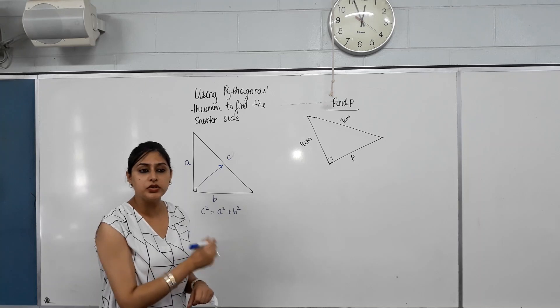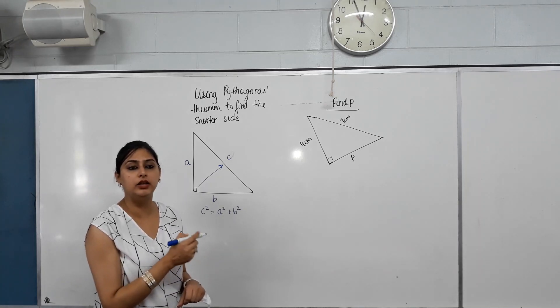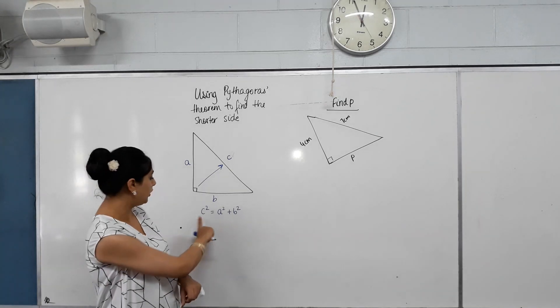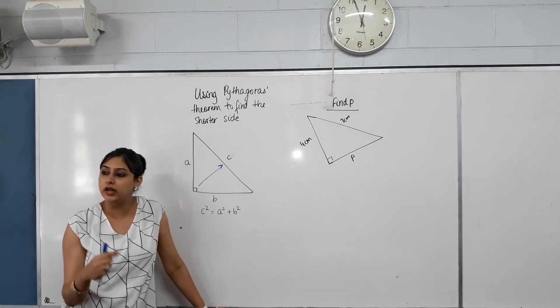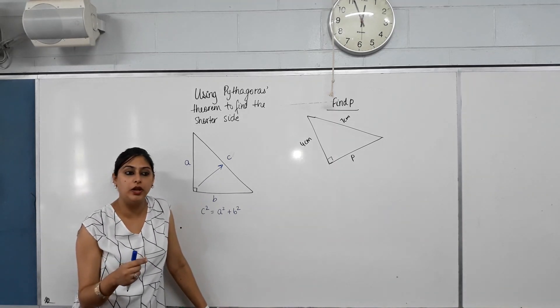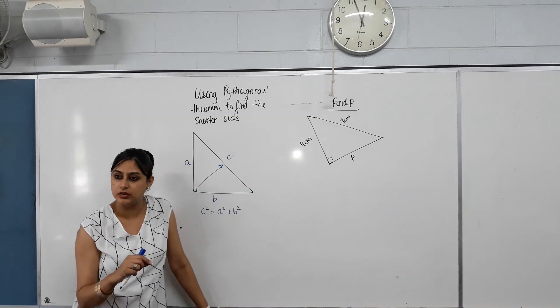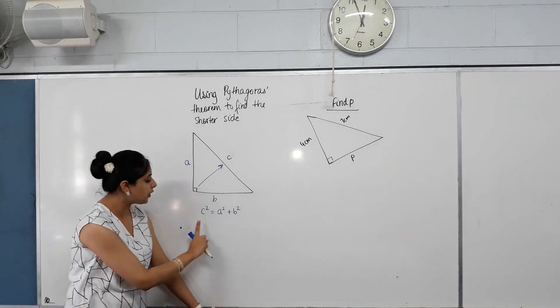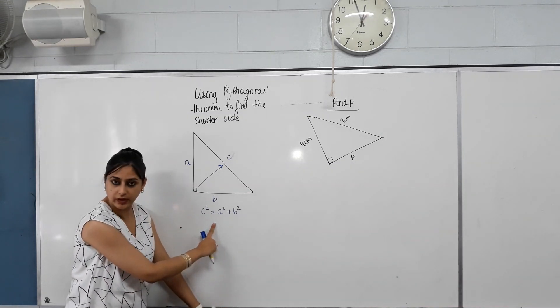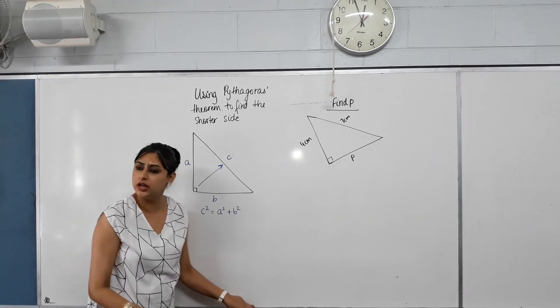Now, we used this formula to find the length of the missing side when hypotenuse was the missing side. So now we're going to rearrange this to make one of the shorter sides the subject. Making subject means we need to have A squared equals.